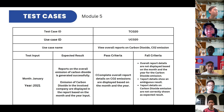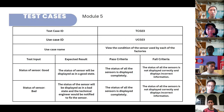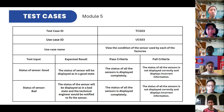For the test cases of module five: the first is viewing overall reports on CO2 emissions — we can see the test input, expected result, pass criteria, and fail criteria. The second test case is viewing the condition of sensors used by each factory. There are two conditions: good and bad. These are the expected result, pass criteria, and fail criteria.